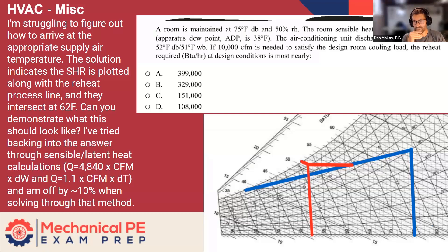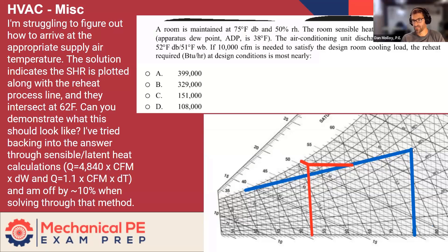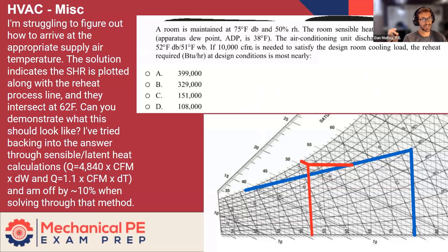I drew this on the psychrometric chart ahead of time. This drawing on the bottom is mine, an attempt to capture the given information and graphically solve for what they're describing in the written solution. The room condition we can find by going to 75 degrees and up to 50% RH — this point here represents the room condition. Then there's the room sensible heat ratio of 0.66. The best way to use this is the ADP. They've told you in parentheses that the apparatus dew point corresponding to that RSHR is 38.